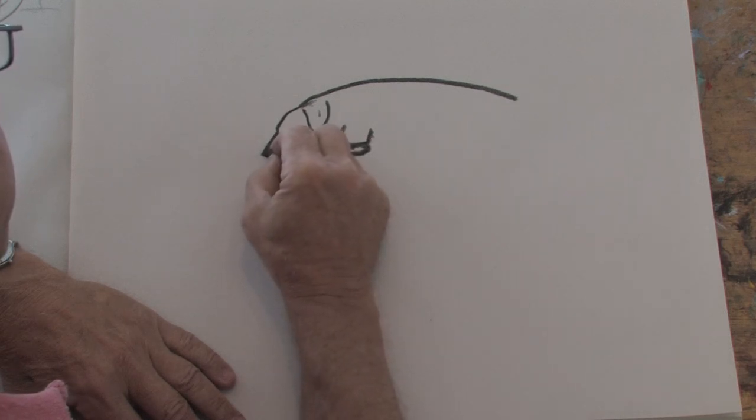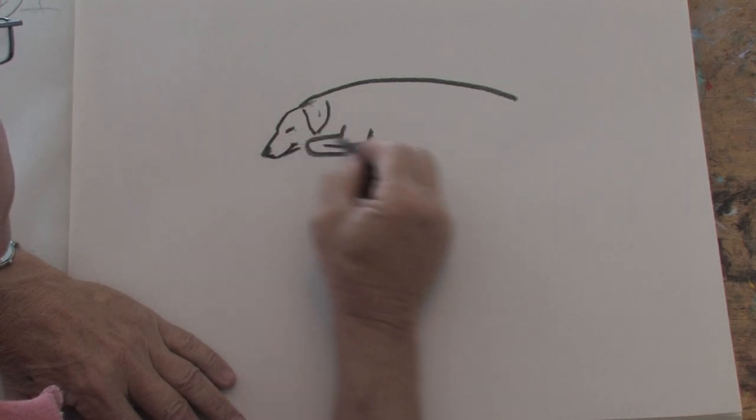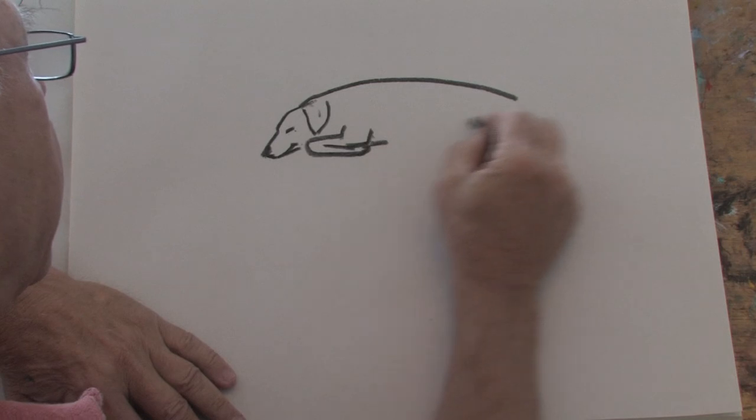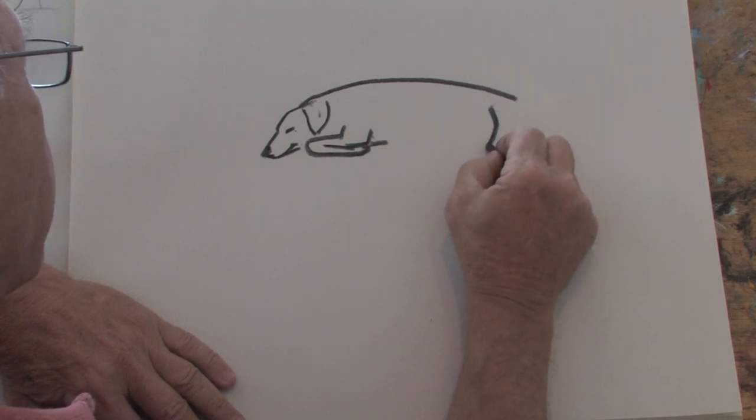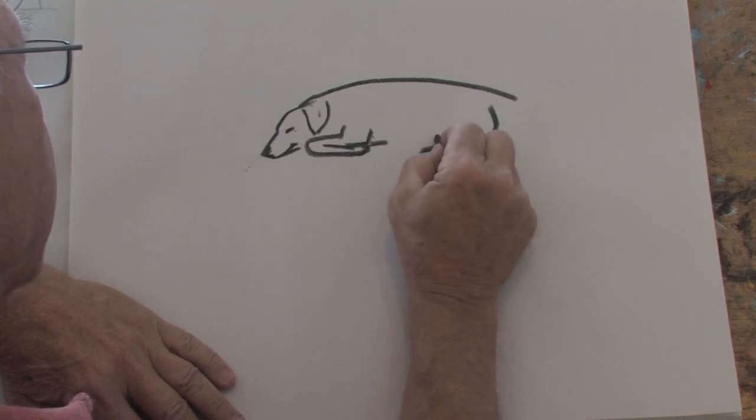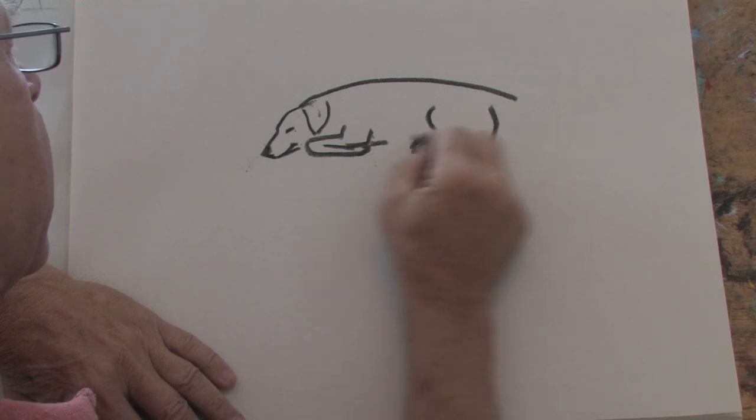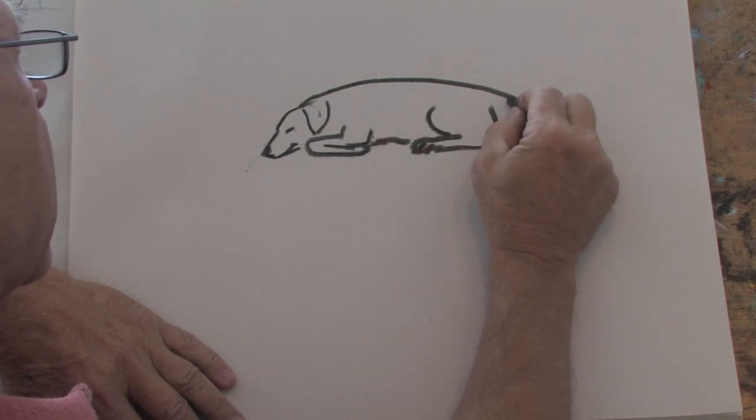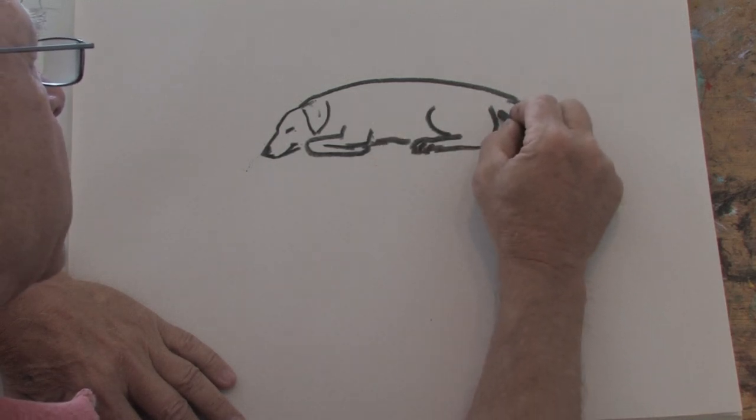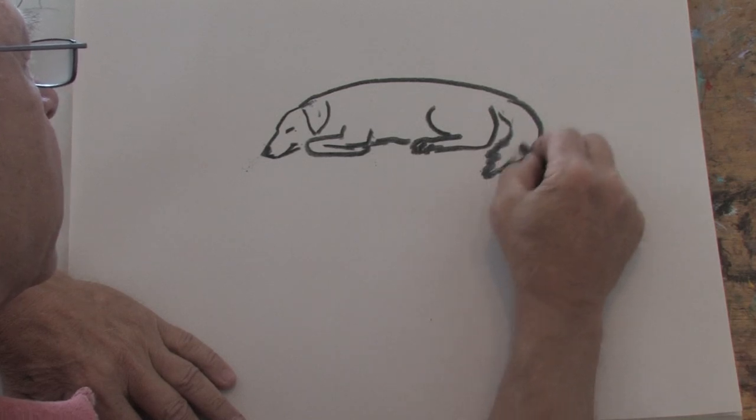We'll put a little dark spot here for his nose. And back here on his hind quarter, I'm going to put his back leg and put his paw in like that. And there we have his back leg. And I'm going to bring his tail around like a nice, fluffy tail, like that.